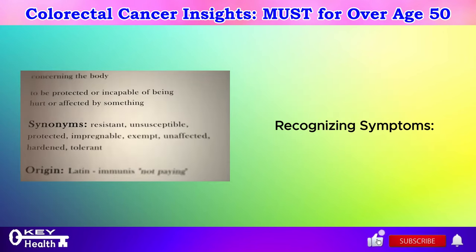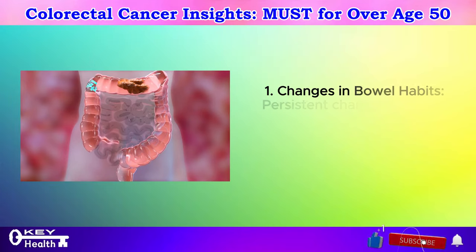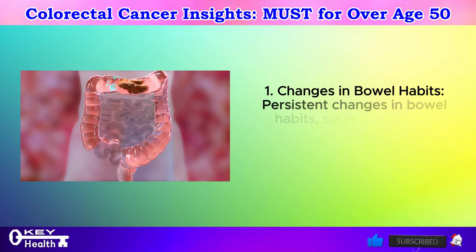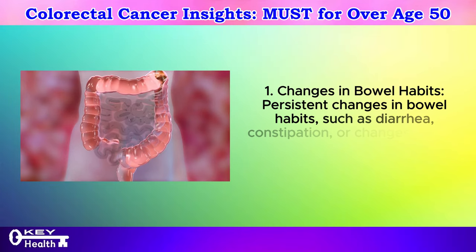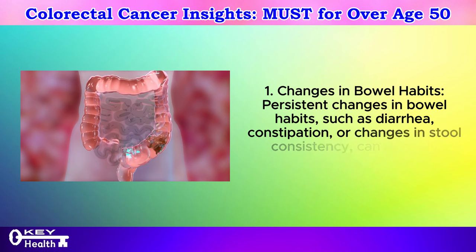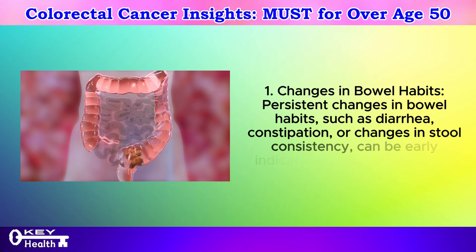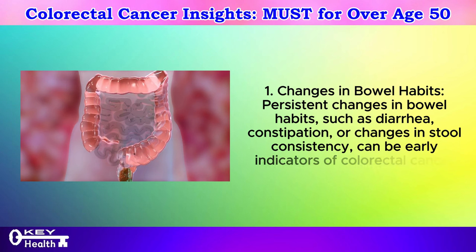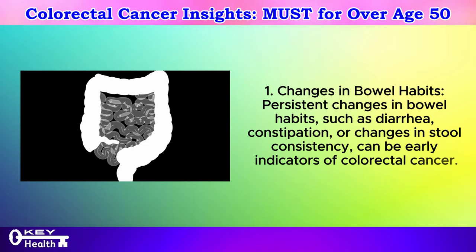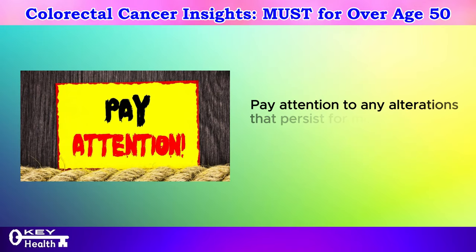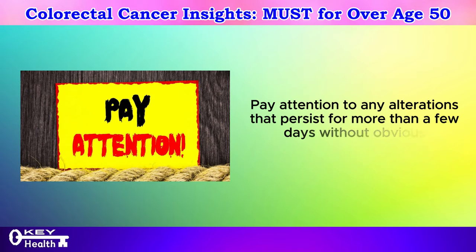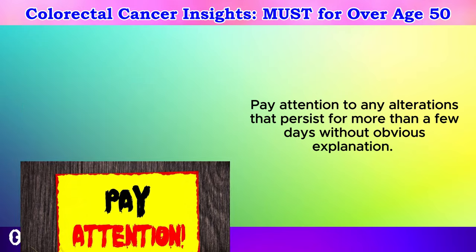Recognizing symptoms. Symptom 1: Changes in bowel habits. Persistent changes in bowel habits — such as diarrhea, constipation, or changes in stool consistency — can be early indicators of colorectal cancer. Pay attention to any alterations that persist for more than a few days without obvious explanation.